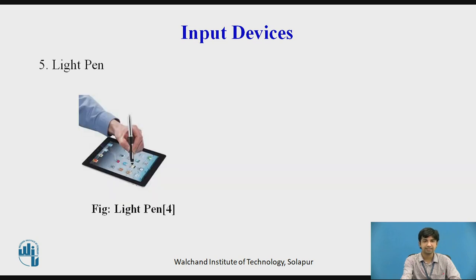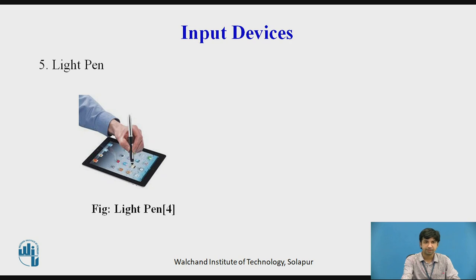The fifth input device is the light pen. In a light pen, you have a light-sensitive diode which is used to point onto the screen. From this pen, we can pick items from the menu — we can directly point to an item on the menu and click it. Unlike a mouse, you don't move the pen on a pad; you just take the pen, point it on the screen, and click it there. It works on the principle of sensing the light signal and the current position on the screen, sending that back to the CPU.